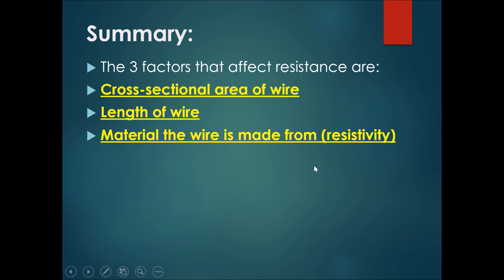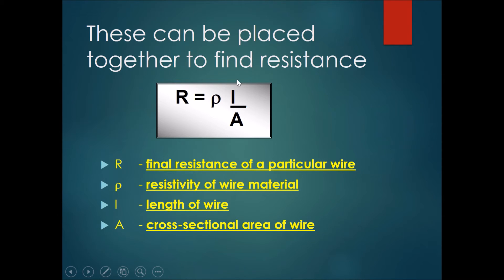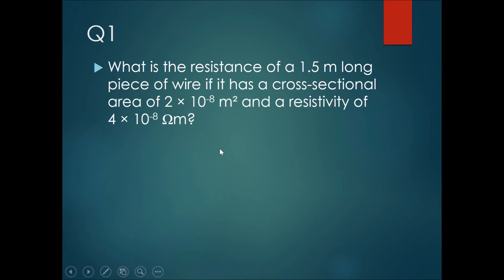In summary, the three factors that affect resistance are: cross-sectional area of the wire, length of the wire, and the material the wire is made from — its resistivity. These can be combined into the formula R = ρL/A, where R is the resistance, ρ (rho) is the resistivity of the wire material, L is the length, and A is the cross-sectional area.